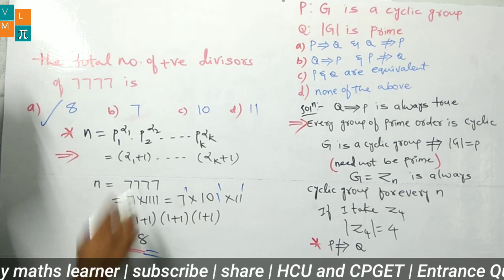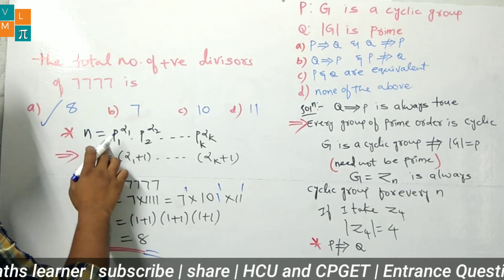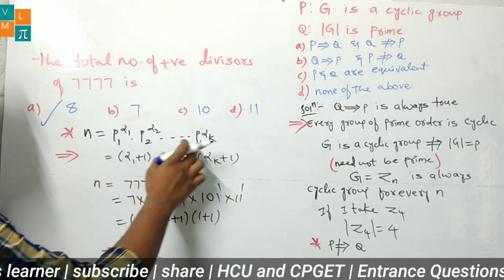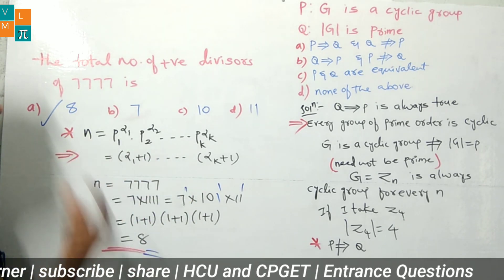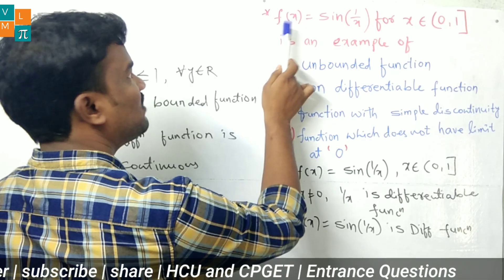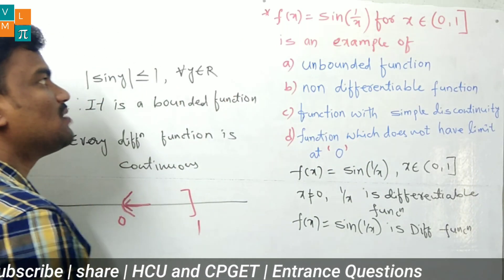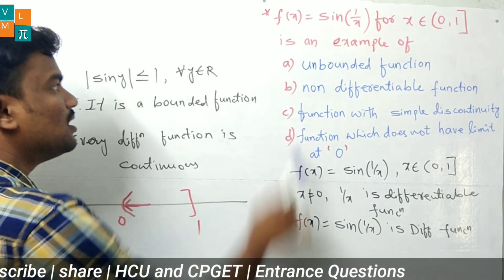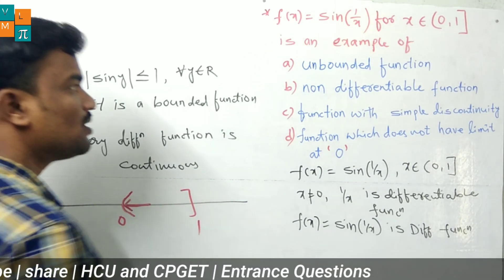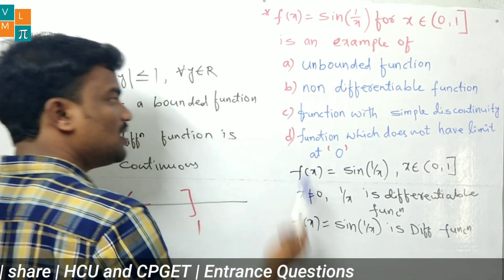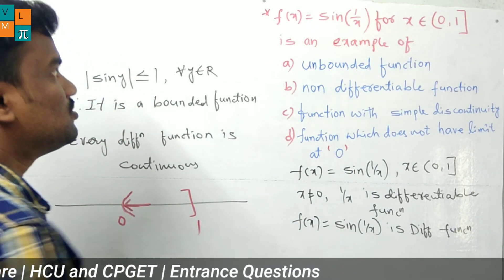To find the number of divisors, first find the prime factorization: n = p₁^α₁ · p₂^α₂ · … · pₖ^αₖ, where p₁, p₂, …, pₖ are prime numbers. Now for the third question: f(x) = sin(1/x) for x belonging to the open interval (0, 1]. We have four options: (A) unbounded function; (B) non-differentiable function; (C) function with simple discontinuity; (D) function which does not have a limit at 0.